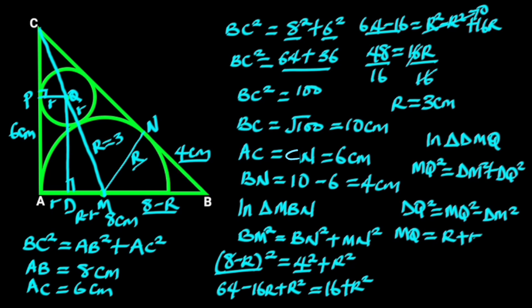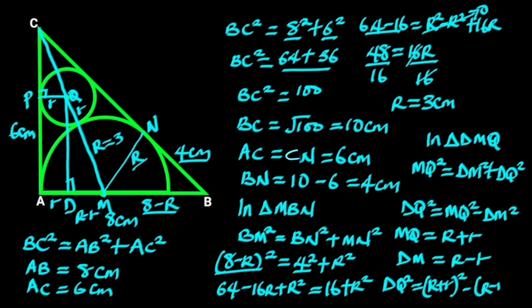Reason: external touching. DM is the radius of the semicircle minus the radius of the circle. Substituting these values in the formula gives us DQ² equals (R plus r)² minus (R minus r)².